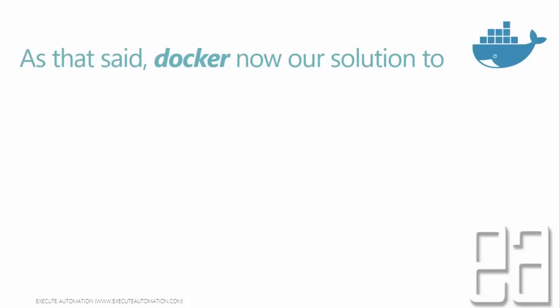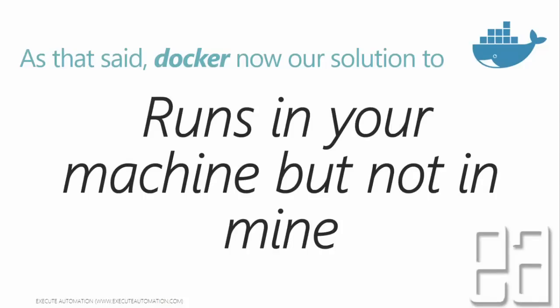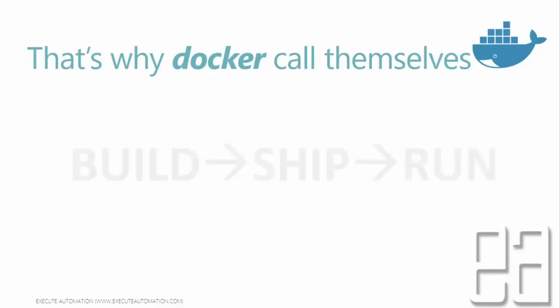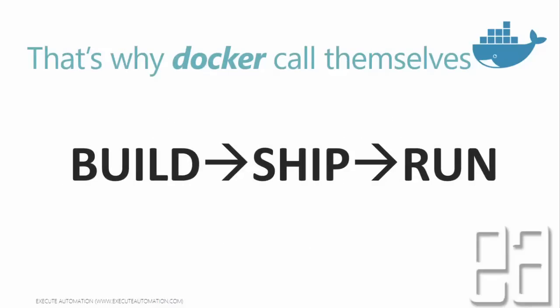The classic problem — "it runs on your machine, but not on mine" — is completely solved with Docker. Most of the time, developers and testers fight each other saying: your machine runs the application, but in my machine the same application is not running fine. That problem is completely gone with Docker, because the Docker container is going to be the same for everybody. If you share the container among your team, then the "runs on your machine but not mine" problem is completely gone. That's why Docker calls themselves Build, Ship, and Run — they just want you to build the container, ship it, and run it on any machine.